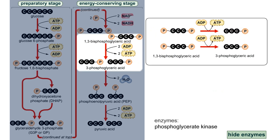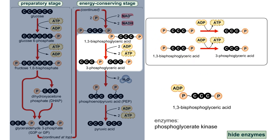In the seventh step, the phosphate groups added in step 6 are used to phosphorylate ADP, converting 1,3-bisphosphoglyceric acid to 3-phosphoglyceric acid, and producing one ATP molecule for each molecule of 1,3-bisphosphoglyceric acid. The net change from glyceraldehyde-3-phosphate at the beginning of step 6 to 3-phosphoglyceric acid at the end of step 7 is the oxidation of glyceraldehyde-3-phosphate. This oxidation provides the driving force to form the NADH and ATP of steps 6 and 7.